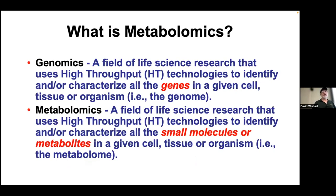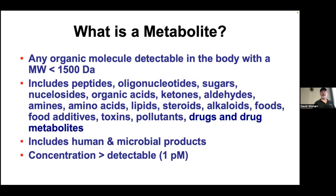In terms of what metabolomics is, you can compare it to genomics, which everyone's heard of. Genomics is a research field that uses high-throughput technologies to identify and characterize genes in cells, tissues, or organisms. Metabolomics is the same — a field of life science using high-throughput technologies to characterize small molecules or metabolites in cells, tissues, and organisms. Metabolites are organic and even inorganic molecules detectable in an organism or tissue; we use a cutoff of about 1,500 Daltons. This includes very small peptides but not proteins, short oligonucleotides but not your genome or RNA, sugars, nucleosides, organic acids, ketones, aldehydes, food components, food additives, toxins, pollutants, herbicides, pesticides, drugs, and drug metabolites.